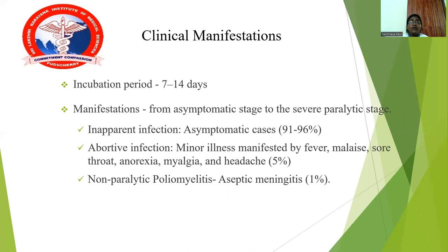The incubation period is about 7 to 14 days on average. Clinical manifestations range from asymptomatic to severe paralytic stages. Asymptomatic cases, called inapparent infection, account for 91–96% of cases. Minor illness manifested by fever, malaise, sore throat, anorexia, myalgia, and headache is called abortive infection, accounting for 5% of cases.